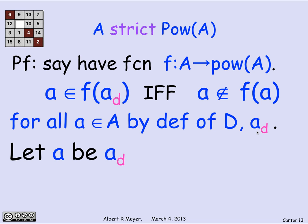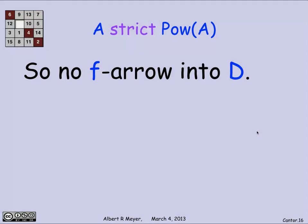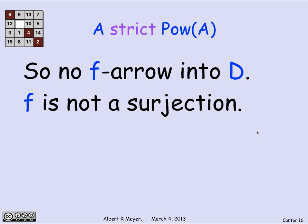We get an immediate contradiction by letting little a = a_D: we get that a_D is in f(a_D) if and only if a_D is not in f(a_D). That's the contradiction. We conclude there can't be an element mapping to D, so D is missing from the range of f, which is why f is not a surjection. That completes the proof: no function from A to the power set of A can be a surjection, so the power set of A is strictly bigger than A.